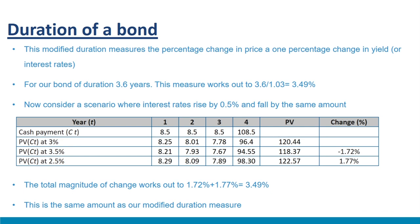As the duration of an instrument increases, its sensitivity to interest rate changes also increases. Therefore, interest rate risk of fixed income securities is computed with the help of the duration measure. Another important application is in managing the interest rate risk of portfolios. Portfolio managers often rely on the duration measure for fixed income securities to hedge or actively monitor interest rate risks. We also understood the computation of the modified duration measure.